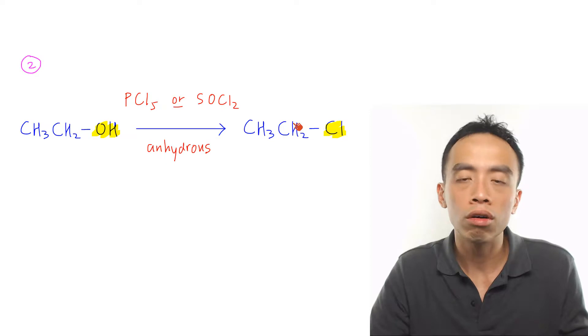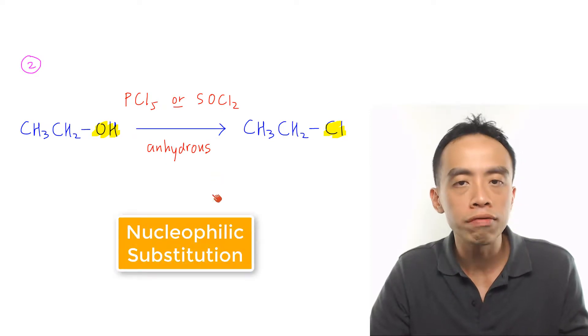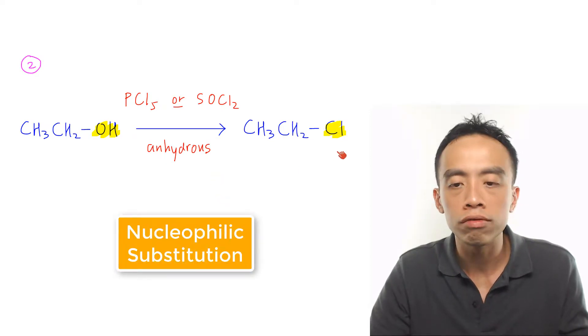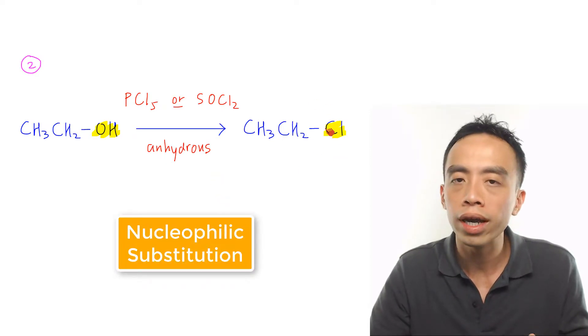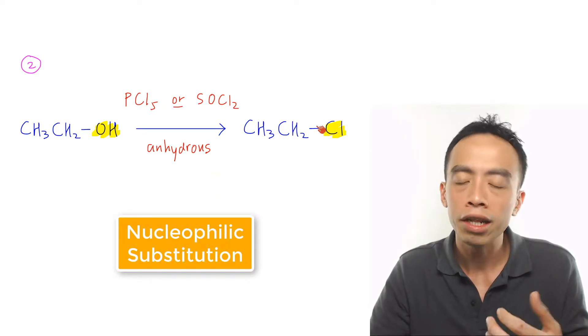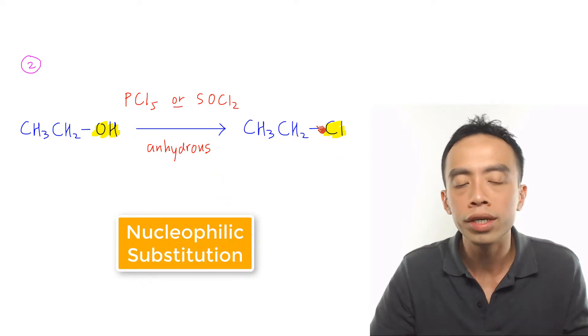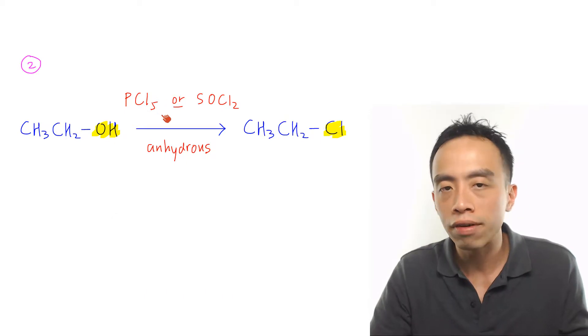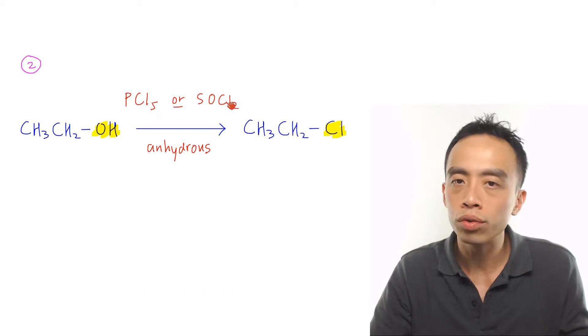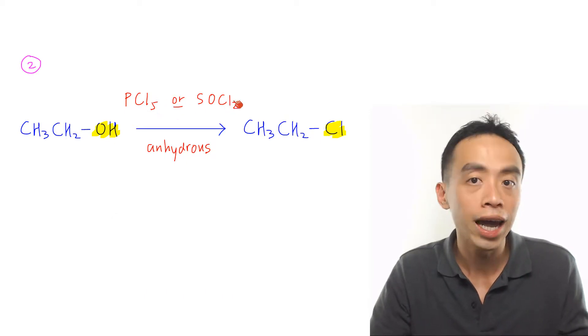The second major reaction of alcohol is the nucleophilic substitution to form chloroalkanes. This is done using PCl5 or SOCl2 anhydrous.